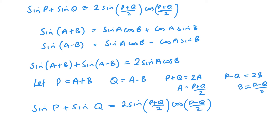If I wanted to derive the formula with a minus sign — sin P - sin Q — I'd follow the same steps but subtract instead of add at the key step, and then the rest of the steps are the same. Equally, the exact same method works for cos P + cos Q and cos P - cos Q, using cos(A+B) and cos(A-B) and adding or subtracting. Let's have a look at where these might be useful.